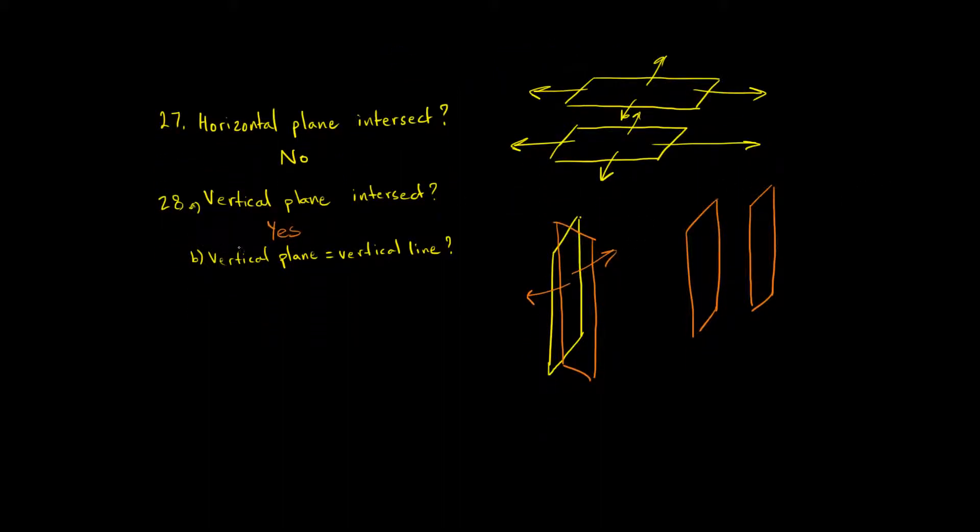28b asks, if we have a line that is in a vertical plane, must that line be vertical? So we have a line in a vertical plane. I'm going to draw my vertical plane right here.